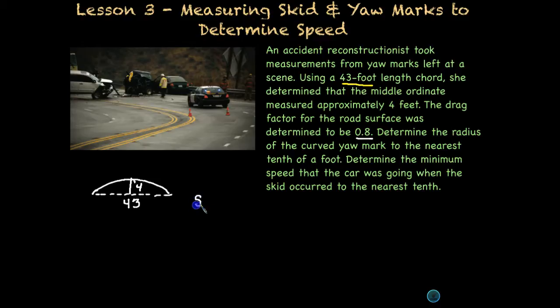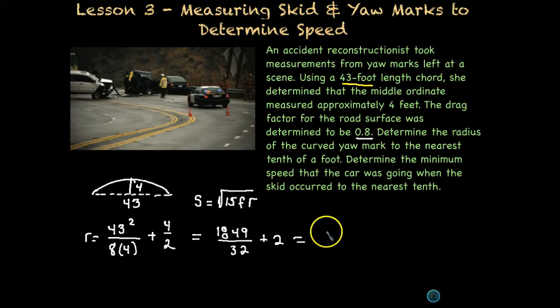All right, we'll remember our equation for yaw mark. So to find our speed, it's the square root of 15, that constant, times our friction, or drag, and then multiplied by the radius, which we don't have. But we can find our radius. Okay, in order to find the radius, remember that we need to take the chord squared, so we take 43 squared, divide that by 8 times the middle ordinate, which is just 4, and then we need to add to that the middle ordinate divided by 2. Okay, putting that in our calculators, if we take 43 squared, we get 1849 divided by 32, and 4 divided by 2 is just 2. Now if I do 1849 divided by 32, I get about 57, and if I add 2 to that, I end up with a radius of 59 feet, that I can now use in my equation.